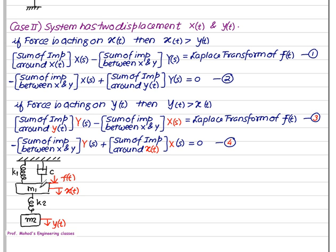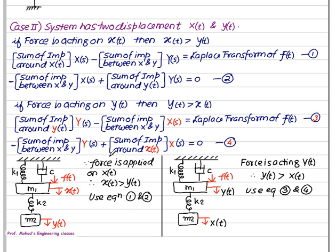Consider a mass system with two masses m1 and m2. m1 is supported by k1 and c, and m2 is attached to m1 by spring k2. We need one variable for m1 and one for m2. Force f(t) is applied on m1 with displacement x(t), and y(t) is the displacement of m2. Since the force is applied on m1, x(t) > y(t), so first term is X(s), second is Y(s). If instead the force were applied on y(t), then y(t) > x(t) and we use Y(s) as the first term and X(s) as the second, applying equations three and four.